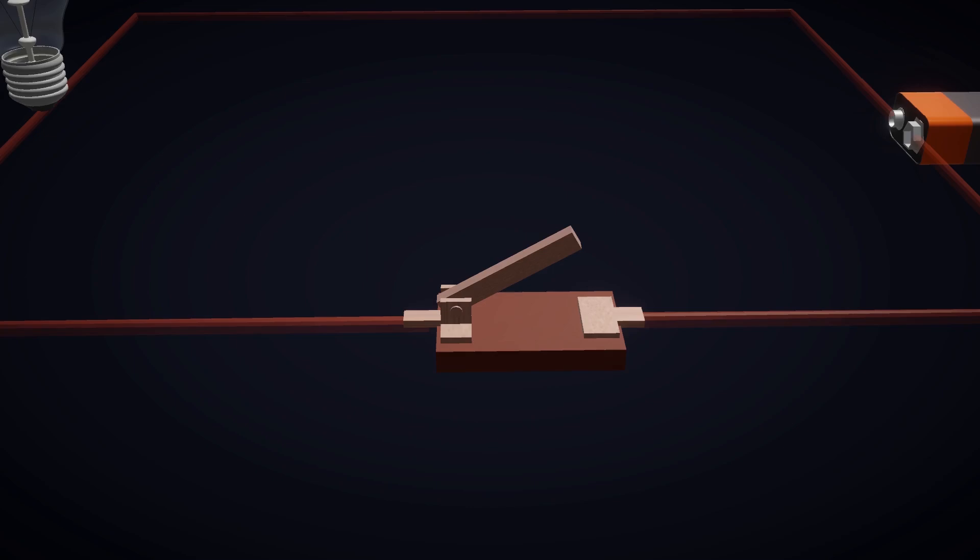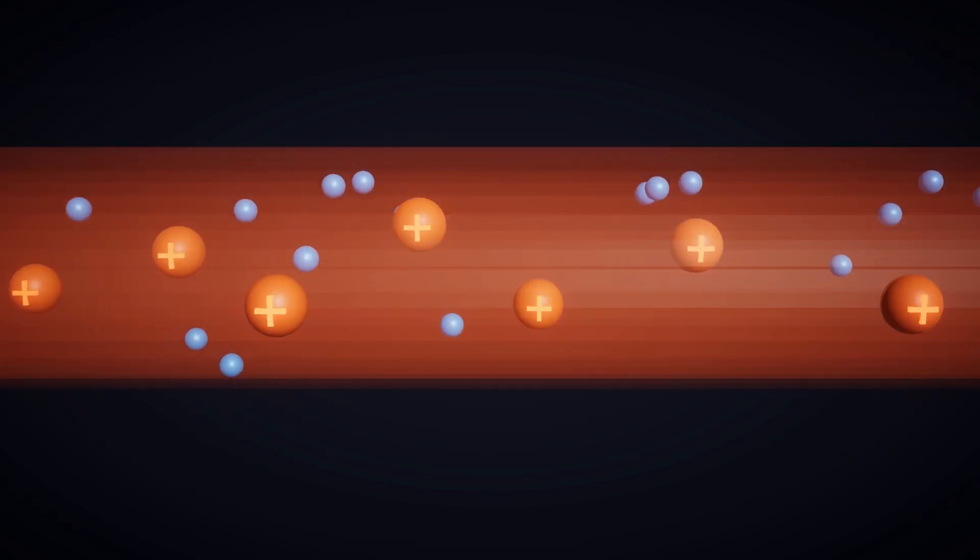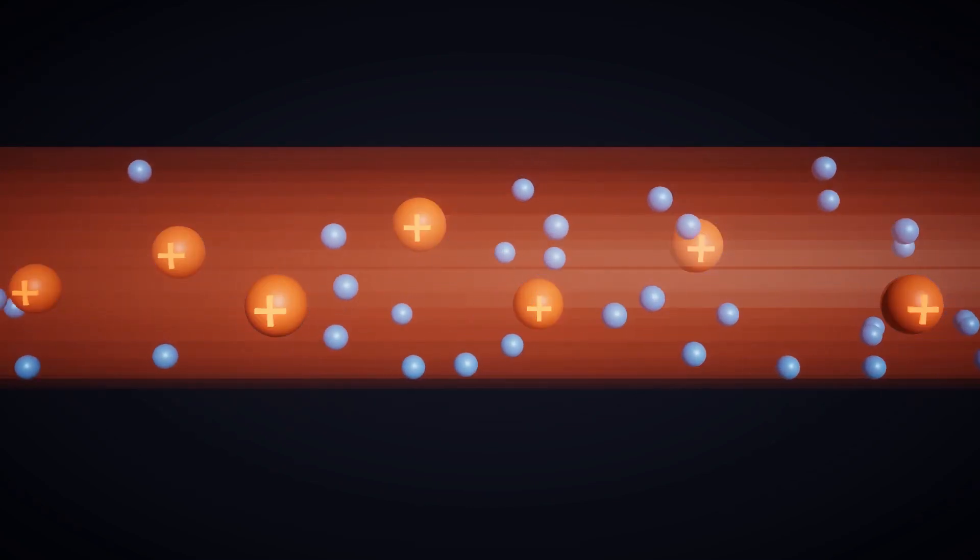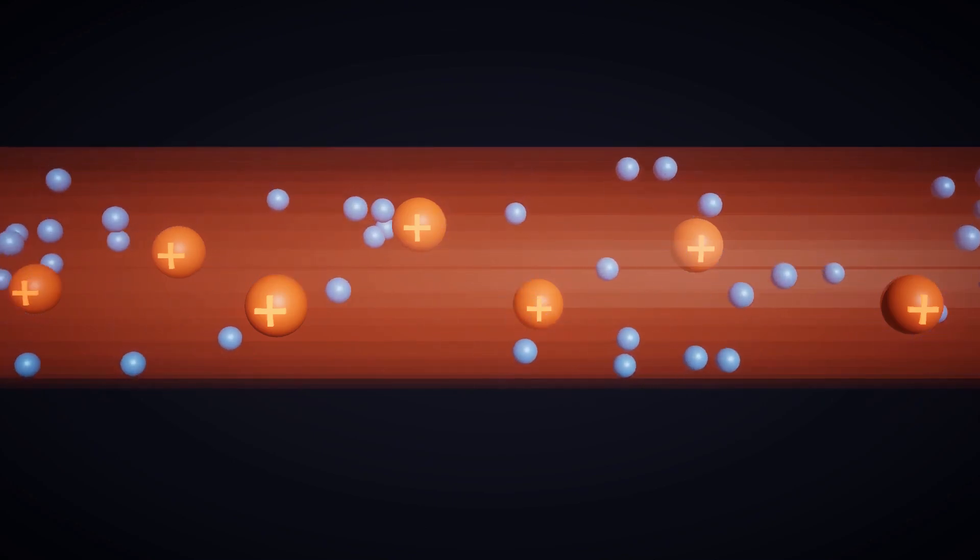We know that in metallic wires, there are free electrons, but these electrons do not move in any particular direction on their own.